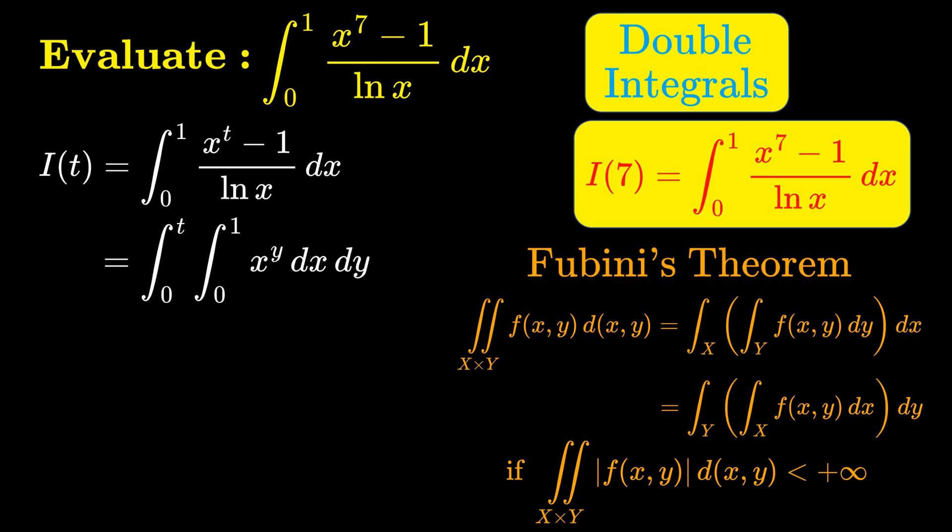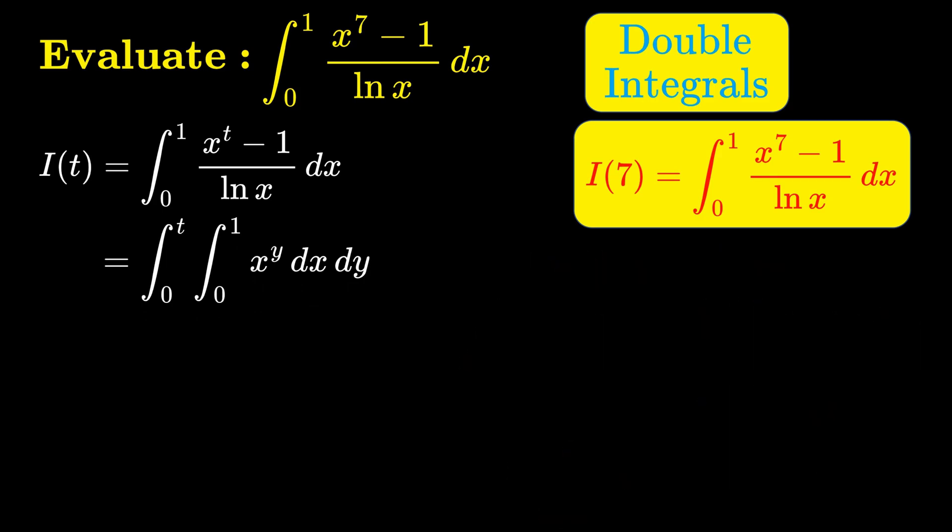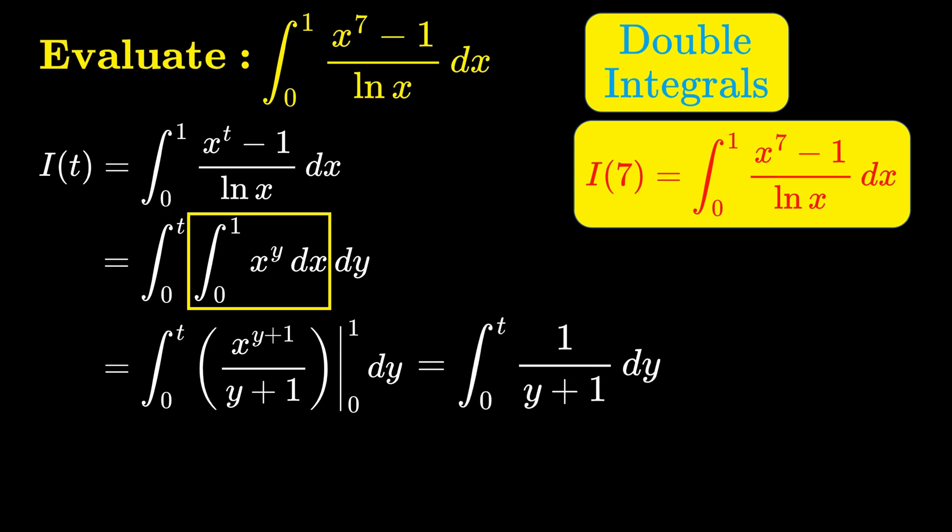The great thing about switching the order of integration is that now we are integrating with respect to x in the inner integral rather than integrating with respect to y. The resulting antiderivative is just x power y plus 1 over y plus 1 by the power rule for integration, and evaluated at 0 and 1 which is just 1 over y plus 1.